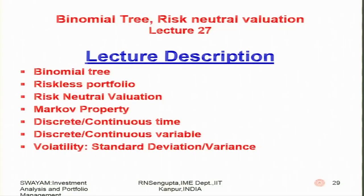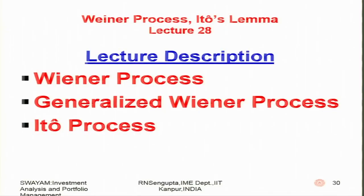The 27th lecture covers binomial tree and risk-neutral valuations — the concept of binomial tree (extendable to multinomial trees), risk-neutral portfolios, risk-neutral valuation, Markov property in stochastic processes, discrete and continuous time concepts, and how stock prices fluctuate. We will consider volatility from a different viewpoint and how standard deviation and variance can be applied to understand it. Lecture 28 covers stochastic processes including the binomial process and Ito's lemma, which is quite famous and has a lot of bearing on the derivation of the Black-Scholes model — including the Ito process and its assumptions.